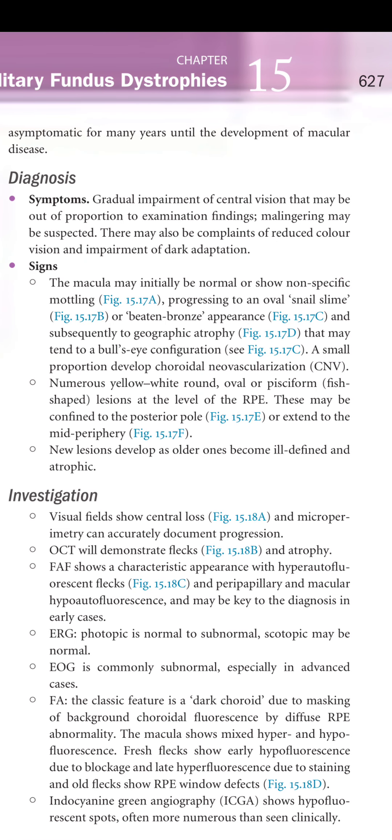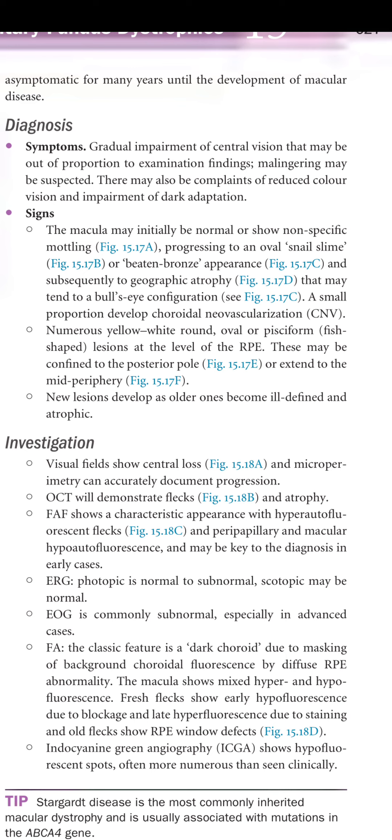Diagnosis consists of symptoms of gradual impairment of central vision that may be out of proportion to examination findings, such that malingering may be suspected. There may also be complaints of reduced color vision and impairment of dark adaptation.